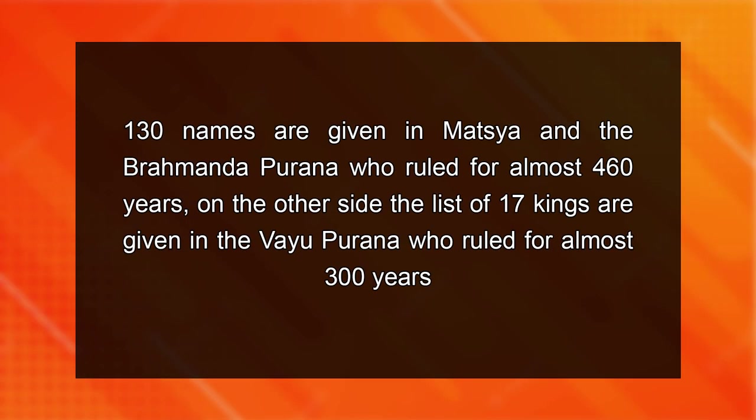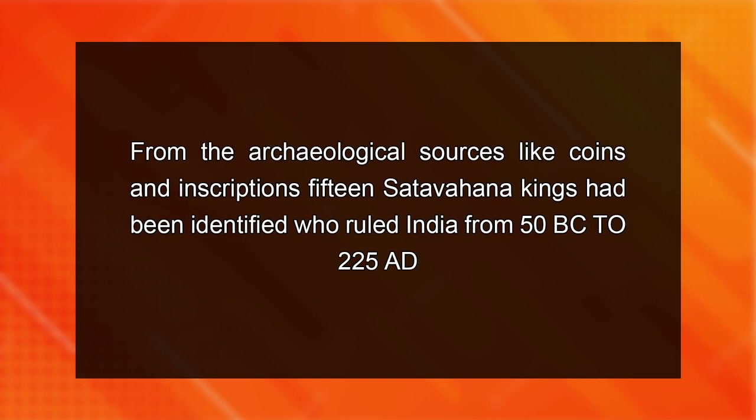Some scholars are of the opinion that Satavahanas had started their rule from Paithan in western Deccan and from there expanded to eastern Deccan, Andhra, and the western coast. The inscriptions of the dynasty mention them as Satavahanas, not as Andhra's or Andhra Bhratiyas. We find a long list of Satavahana rulers from the Puranas: 30 names are given in Matsya and the Brahmanda Purana who ruled for almost 460 years, while a list of 17 kings is given in the Vayu Purana who ruled for almost 300 years. From the archaeological sources like coins and inscriptions, 15 Satavahana kings had been identified who ruled India from 50 BCE to 225 CE.